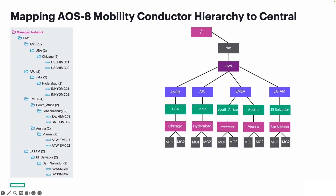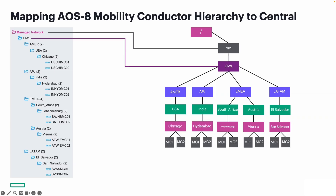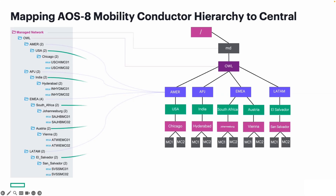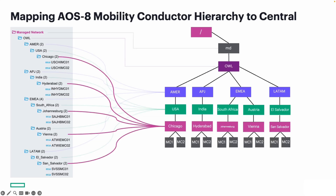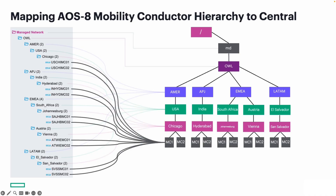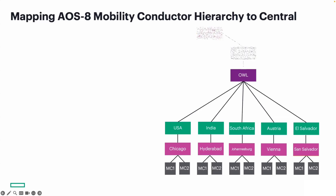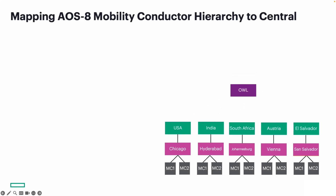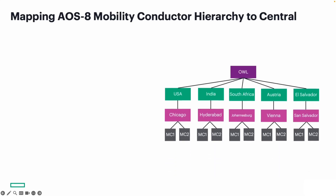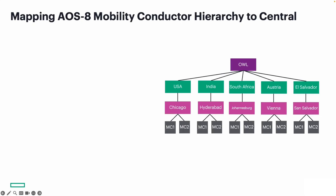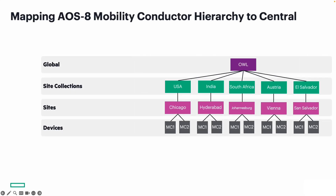Most should now be familiar with how each node on the left maps to the diagram on the right. In this example, the managed network maps to MD, and OWL maps directly to the OWL node on the right. Global regions map to the purple level, countries to the green level, sites to the next level down, and finally controllers to the gray. So using this diagram, the first thing we do is remove the global regions and the MD and MM nodes at the top, and now we can see how it applies to the new hierarchical model. On the left, you can see the scopes from the new Central configuration window. The library at the top is a repository for the different shared profiles applied to the scopes below, and device groups can be compared to AP groups in AOS 6 and 8.